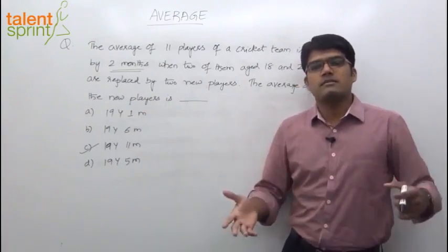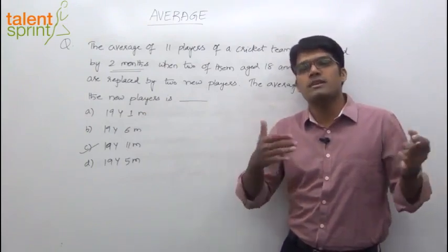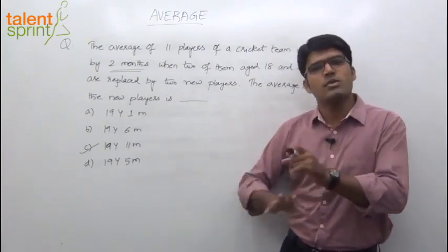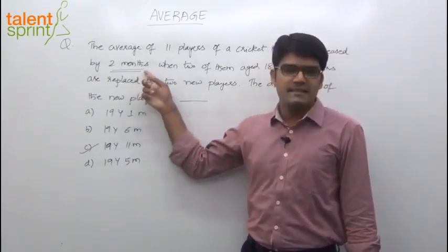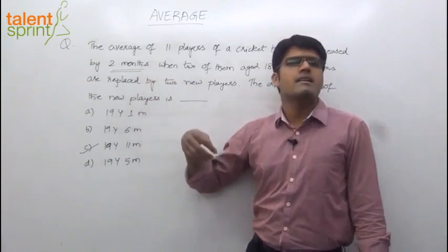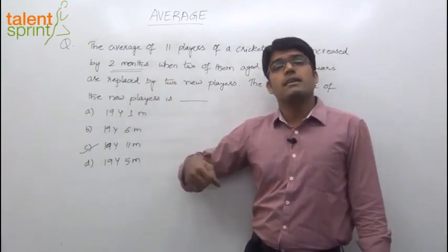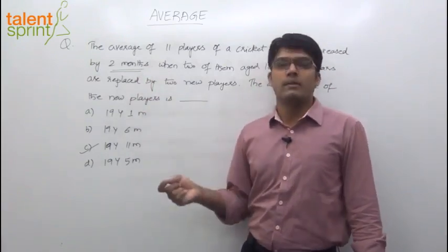Practically it may not be the case. Some of them may be increasing by more than 2 months, others may be less than 2 months, but overall balanced as 2 months there. So the point is, when the average of 11 players has increased by 2 months, we can say that the increment in the age of each player is 2 months.